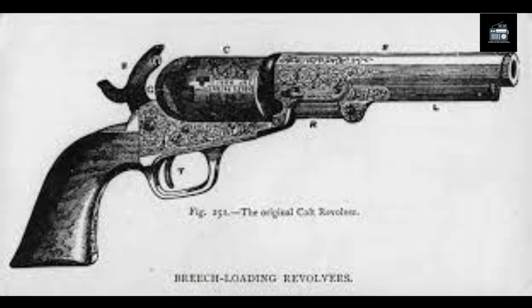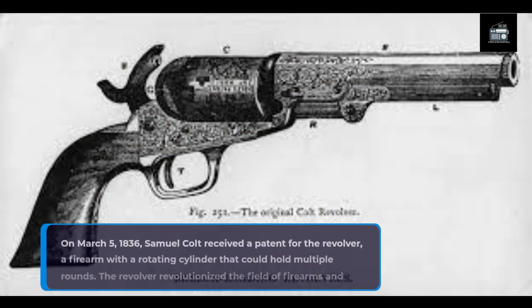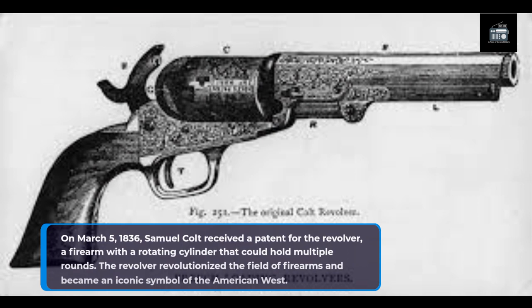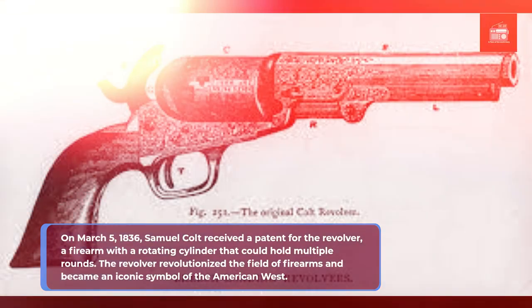On March 5, 1836, Samuel Colt received a patent for the revolver, a firearm with a rotating cylinder that could hold multiple rounds. The revolver revolutionized the field of firearms and became an iconic symbol of the American West.